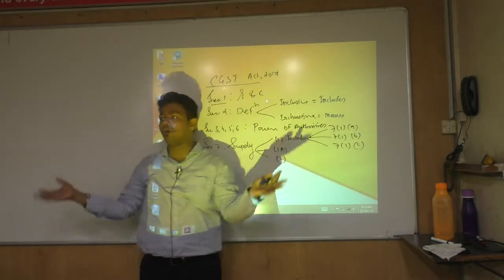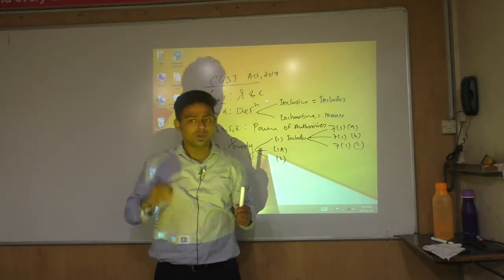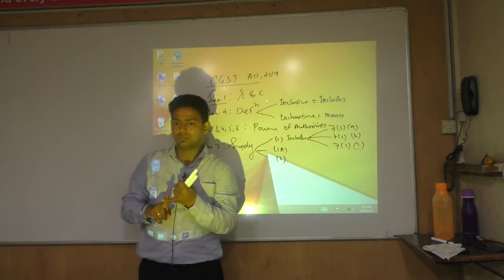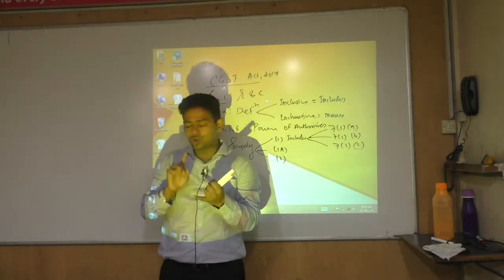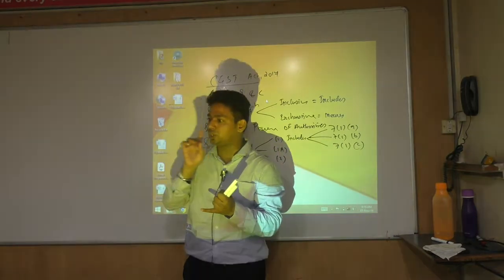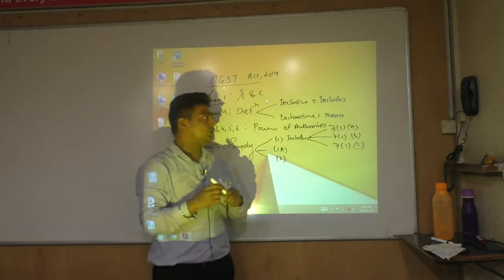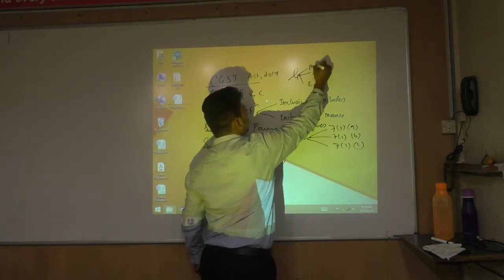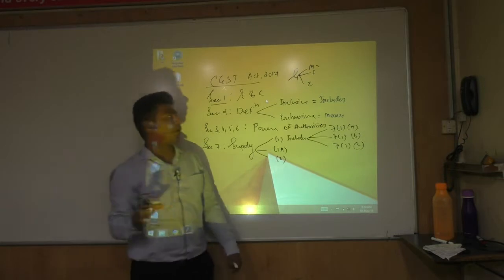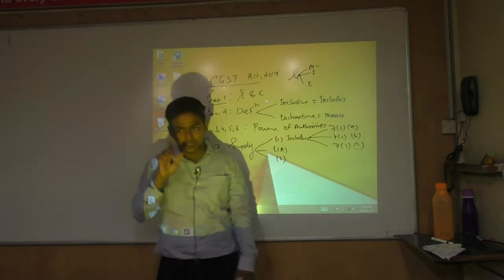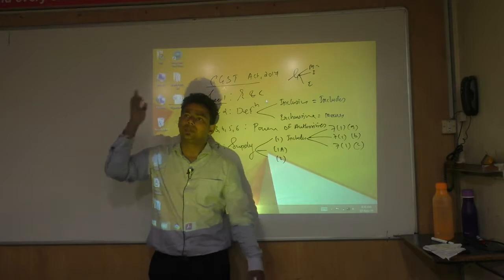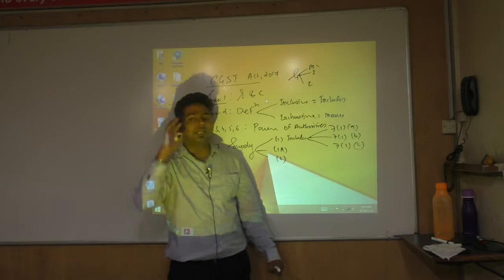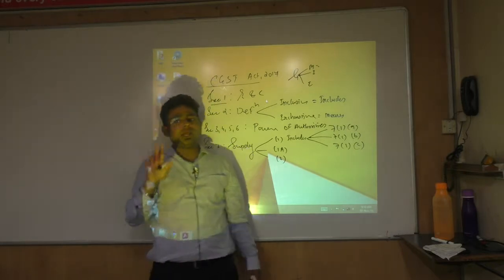Supply includes all forms of supply of goods or service or both. What is the definition of goods? It is in Section 2, Clause 52. Goods means any kind of movable property. It includes actionable claim, growing crops, grass, and things attached to and forming part of land. And it excludes two items: money and security.